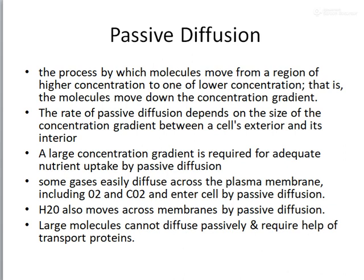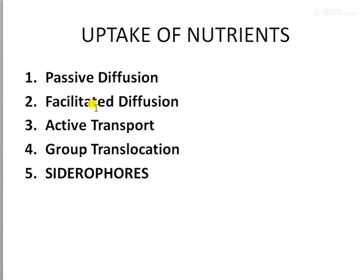Various gases such as oxygen and carbon dioxide can diffuse across the plasma membrane by passive diffusion. Water is also moving across the membrane by passive diffusion. But larger molecules won't be able to diffuse passively and they would require the help of various other proteins to enter into the cell. In such cases, we use the next method called facilitated diffusion.